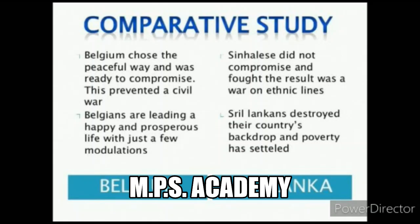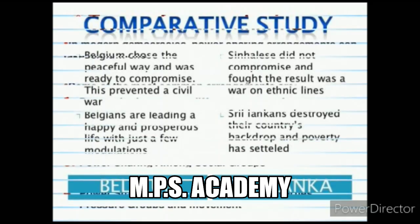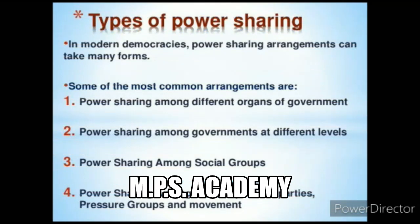Belgium chose the peaceful way and was ready to compromise, which prevented a civil war. The Sinhalese did not compromise and fought — the result was war on ethnic lines. Belgians are leading a happy and prosperous life with just a few modifications in their constitution, while Sri Lanka destroyed its backdrop and poverty settled in. Belgium adopted an accommodation policy — the policy of taking everyone along — and the result was prosperity. Power sharing allows each side to check the powers of the other.